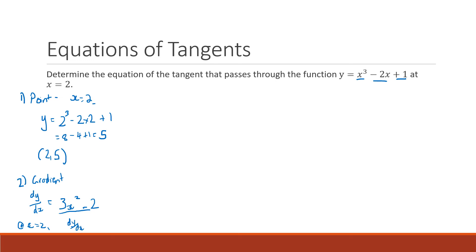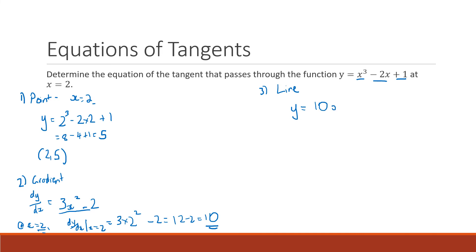At x = 2: 3 times 2² minus 2 — that's 2² = 4, times 3 = 12, minus 2 = 10. So the gradient of our function at x = 2 is 10. This is all the information we need. Our line will have the formula y = 10x + c, because we just worked out the gradient is 10.